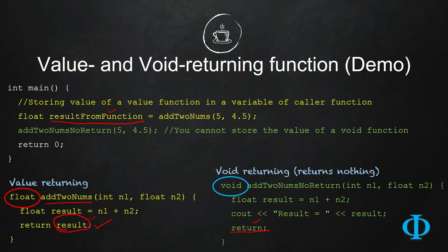So, it is not returning anything. And that is the meaning of void. It returns nothing. And since it is not returning anything, you cannot store the value of a void returning function in any variable of the caller function.